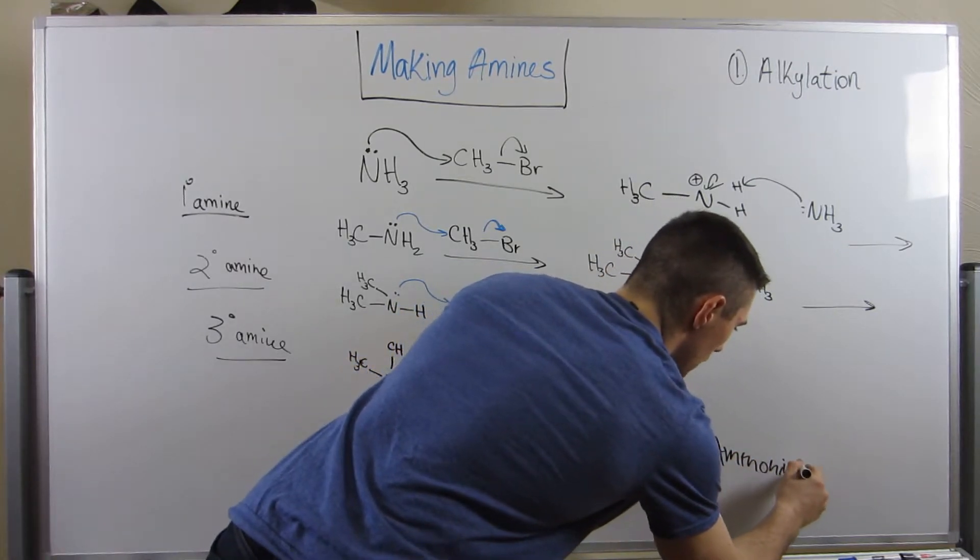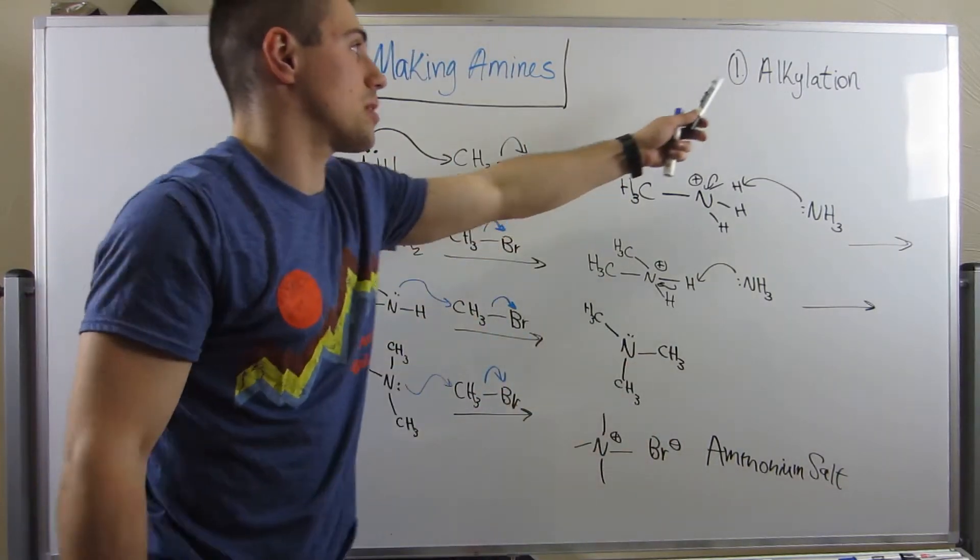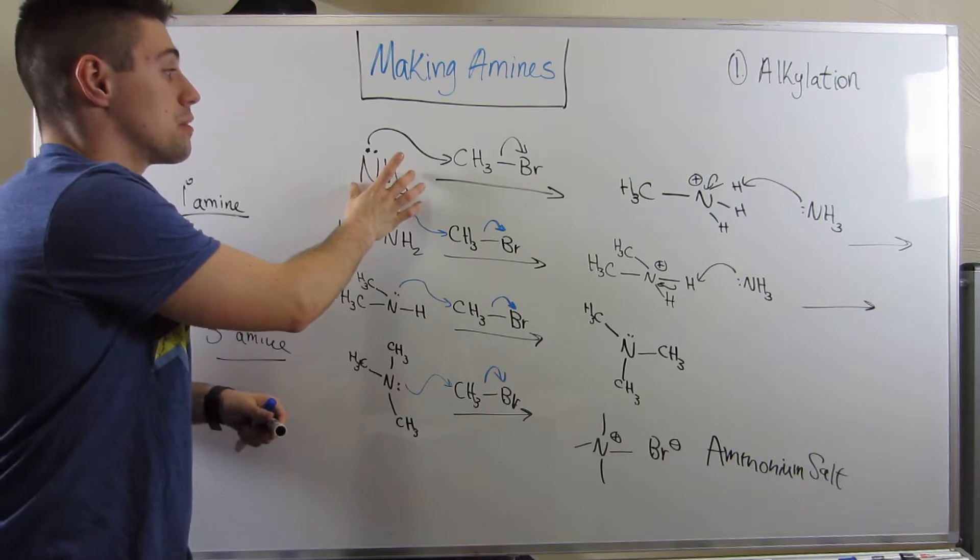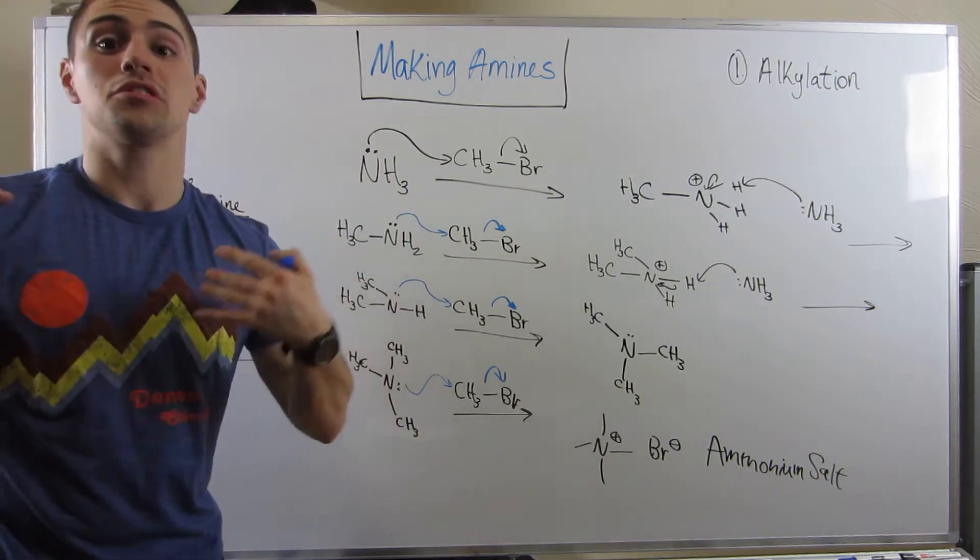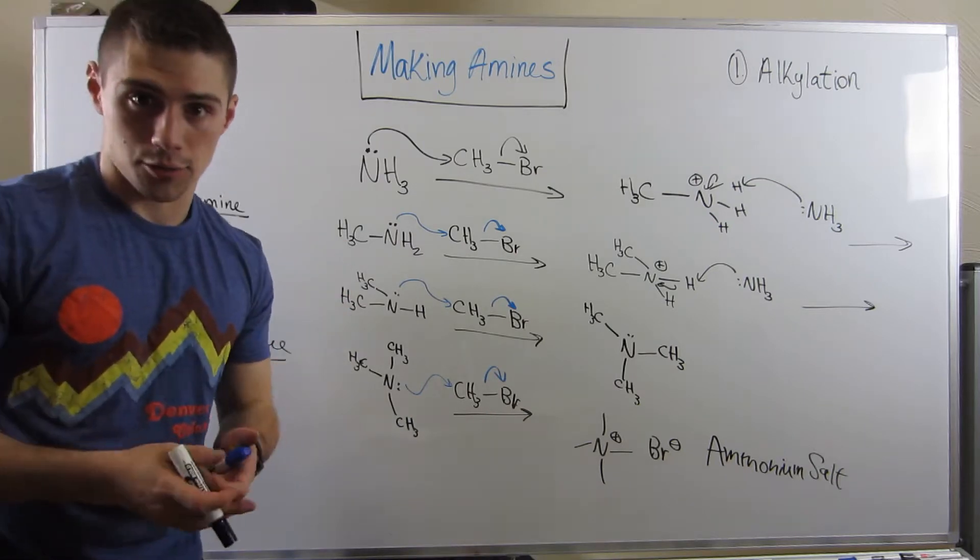You can see if you just have one equivalent of this, you can make a primary amine. Attack once, end up as a primary amine. Maybe double the amount, that would take me to a secondary amine. Three equivalents of this stuff? That would take me to a tertiary amine. So you can see how you can manipulate, just starting out with ammonia, you can make a wide variety of amines, primary all the way up until this ammonium salt. This is alkylation. You pick a substrate, you do SN2. You don't have to start out with ammonia, but you have to start out with some amine.